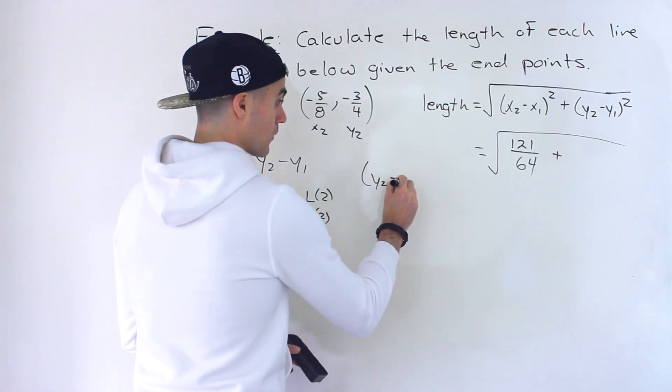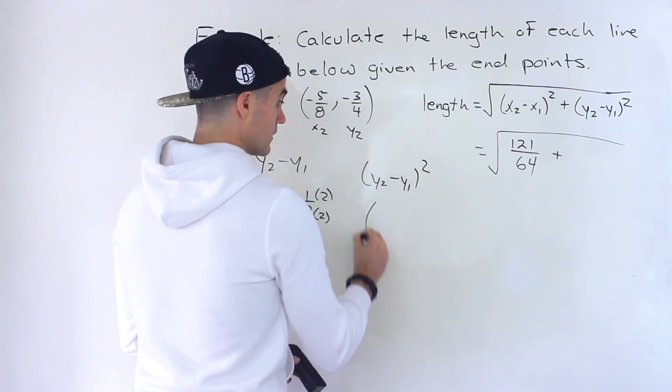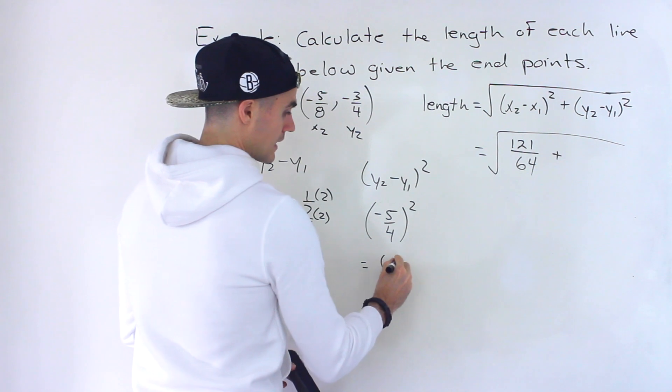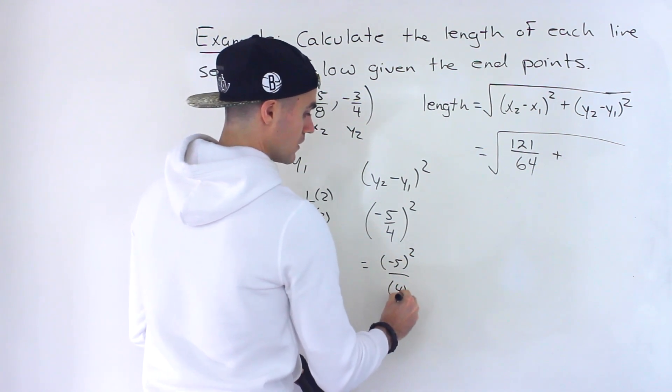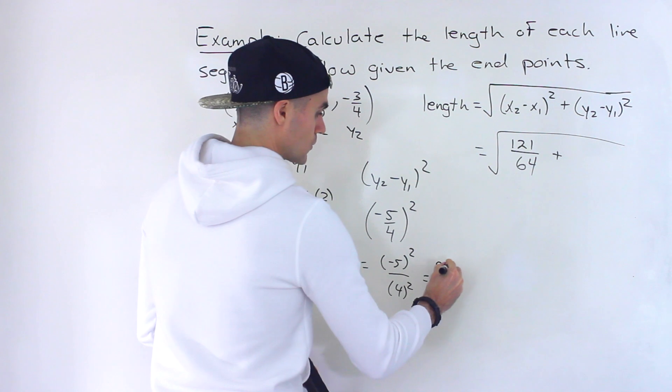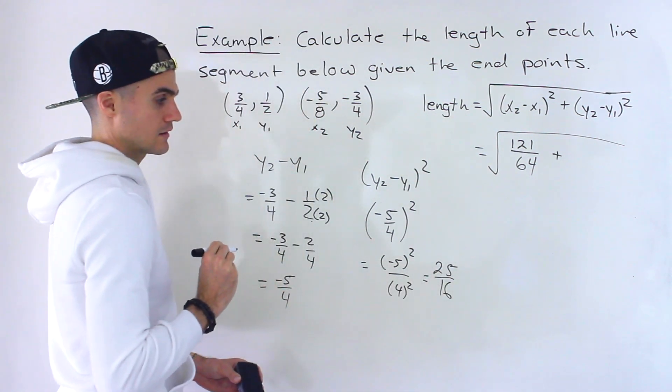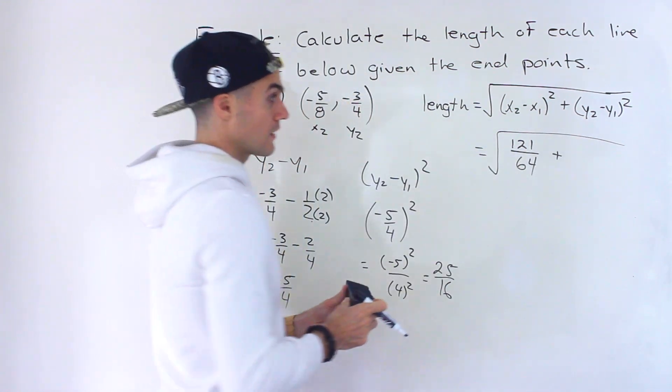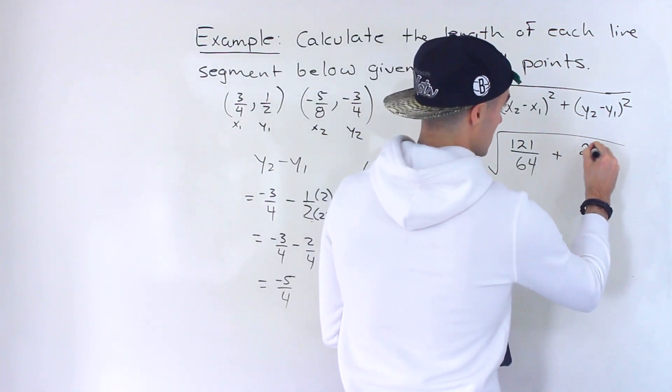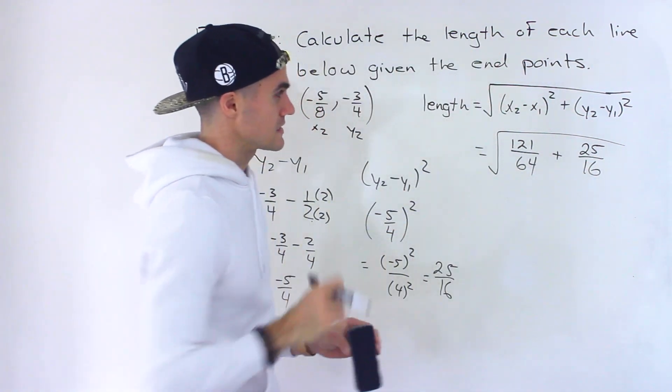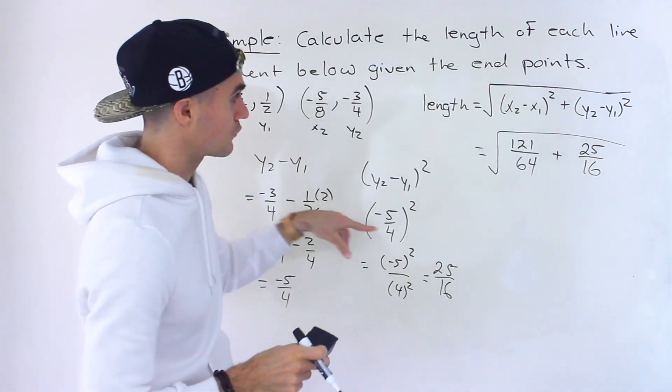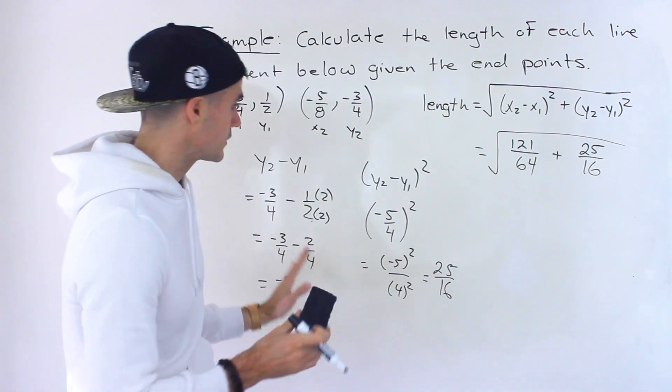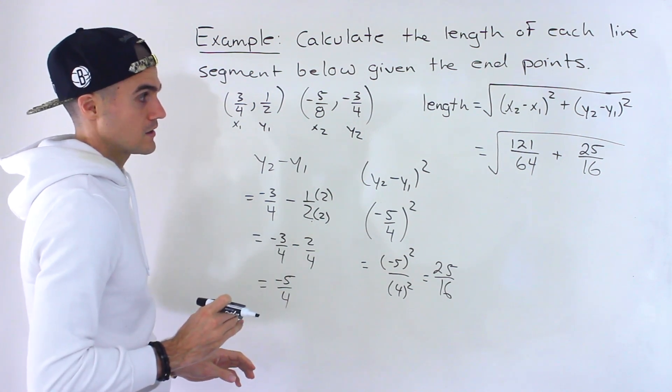Now, what if we take y2 minus y1, square it, it would be negative 5 over 4 squared. So then we could take the negative 5 to the power of 2. We could take the 4 to the power of 2, which would give us 25 over 16, like that. So this whole portion ends up being 25 over 16. So you could see how much nicer it is to do it on the side, because imagine we were doing all this work for both of them. Within there, it could start getting messy. And then it allows you to nicely go back and check any mistakes that you made.